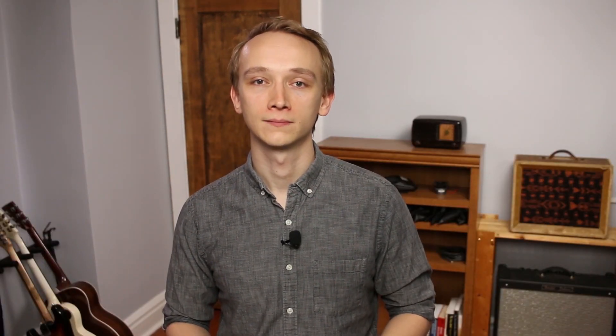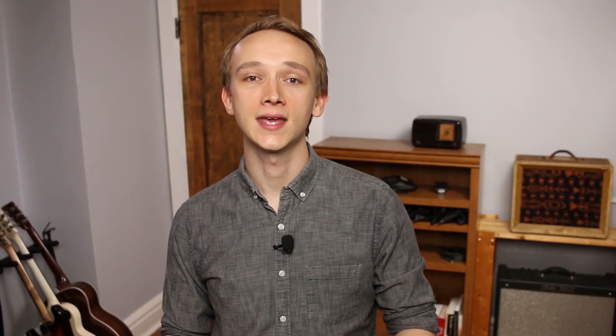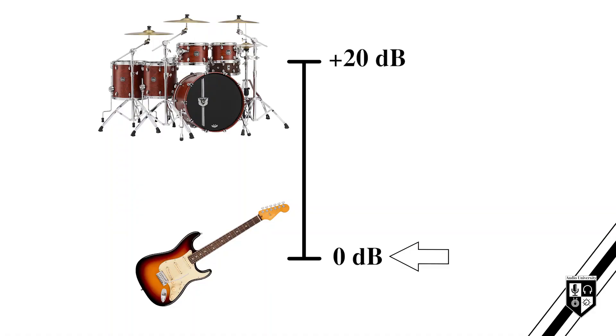The decibel accounts for this fact by presenting absolute units on a scale that better relates to human hearing. A decibel is a way of describing the ratio between two quantities. Saying 'the drums are 120 dB' is an incomplete statement, because the decibel alone has no value. It's only when you draw a comparison to something else that the decibel has meaning. You could instead say the drums are 20 dB louder than the guitar, and this statement is more meaningful because it draws a comparison between the level of the drums and the level of the guitar.